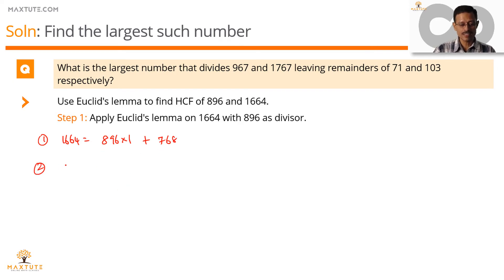So, let's apply it recursively. This time on 896 with 768 as the divisor. 768 will divide it once and leave a remainder that is equal to 128. Remainder is non-zero. So, apply it recursively.